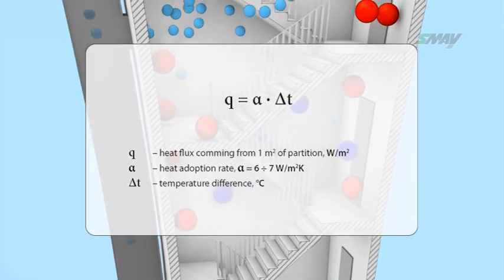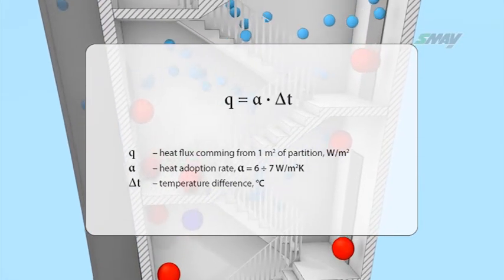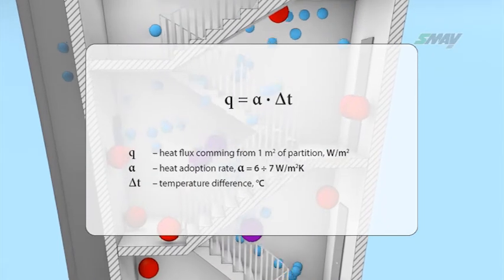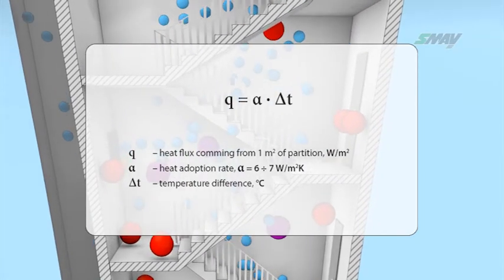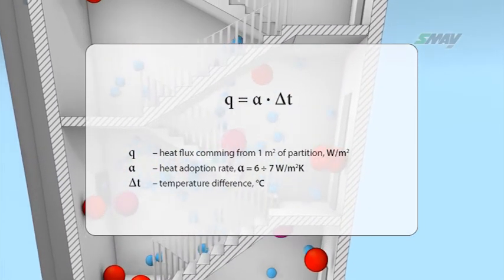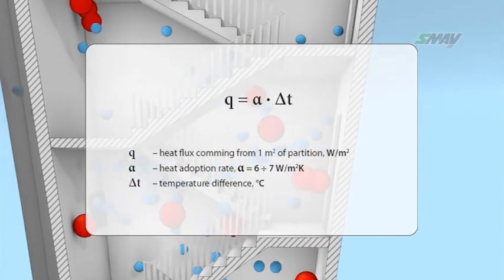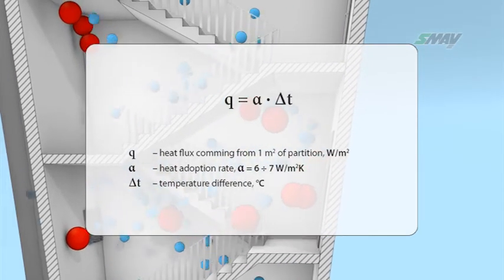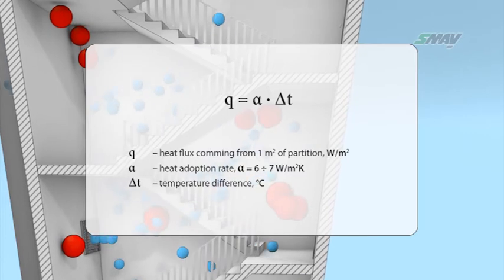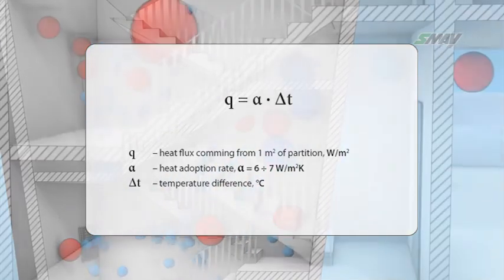For example, if the temperature difference is 20 degrees, the walls may dissipate up to 140 watts from every square meter, as a result of which air density falls, causing buoyancy to push it upwards. We are not talking about serious stairwell heat loss during evacuation as its accumulated heat amounts are vast.